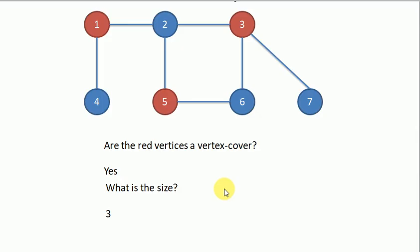In the continuing value, we have chosen vertices 1, 5, and 3. We can see that all the edges are covered: edges 1-4, 1-2, 2-5, 5-6, 2-3, 3-6, and 3-7. All the edges are covered, and here is the minimum number of vertices we have found, and we have covered all the edges.